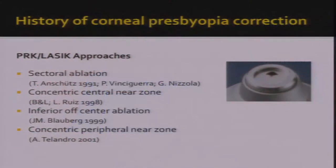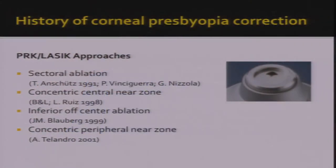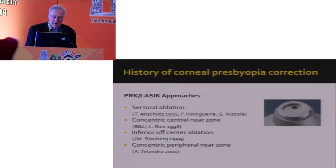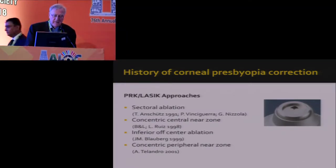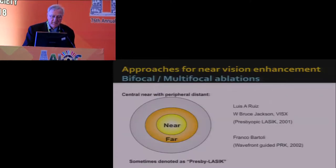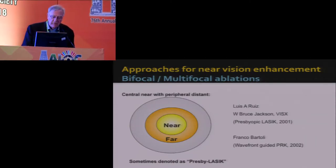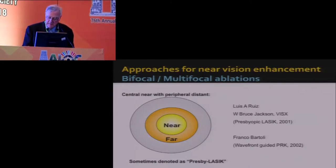The history of corneal presbyopia correction — the PRK and LASIK approaches are the sectoral ablation, concentric central near zone, inferior off-center ablation, and concentric peripheral near zone. More than 20 years, nearly 30 years, we have been trying to do presbyopic surgery on the cornea. The approaches for near vision enhancement include bifocal and multifocal ablation — central near with peripheral distance from Louis Ruiz and Bruce Jackson with the VizX machine, presbyopic LASIK in 2001.